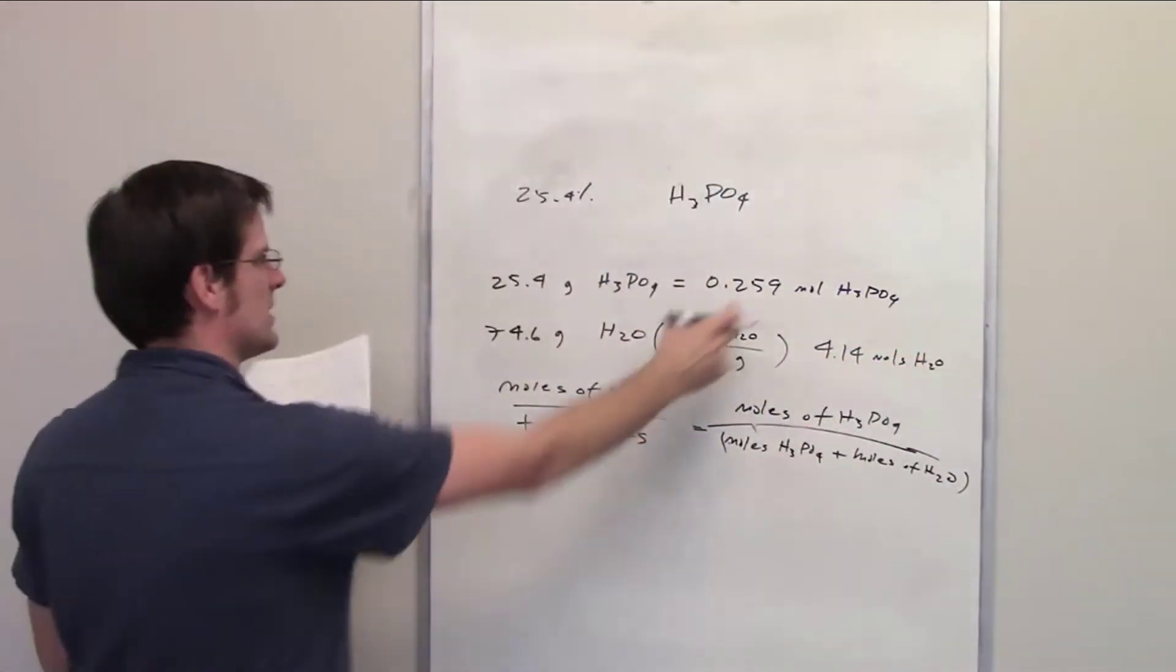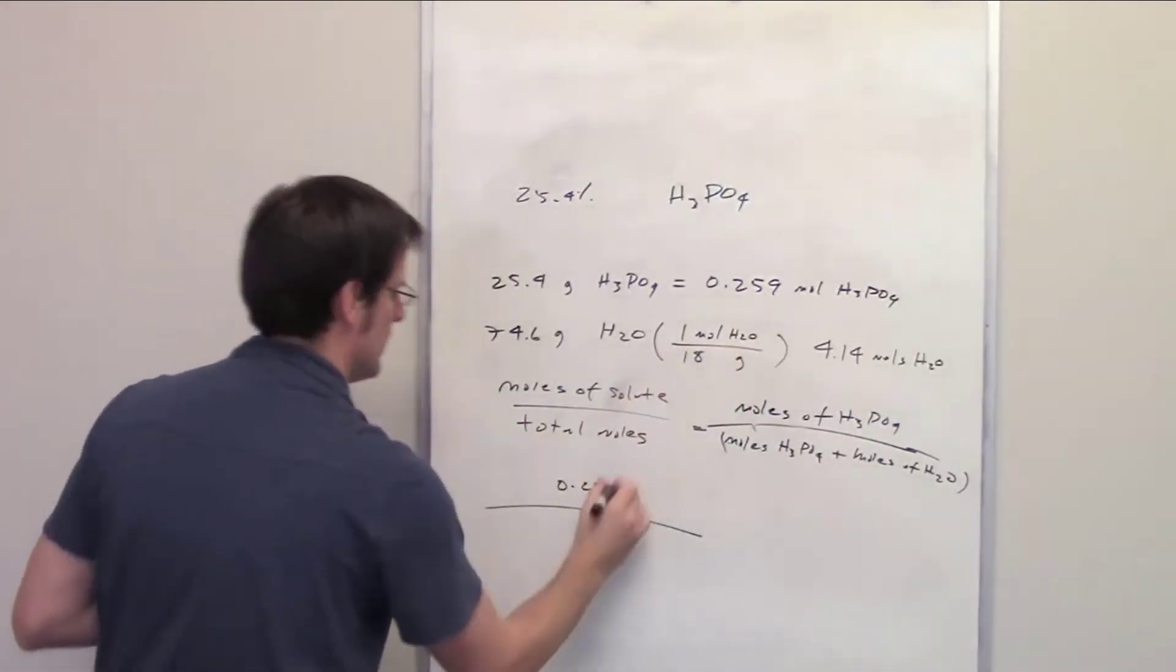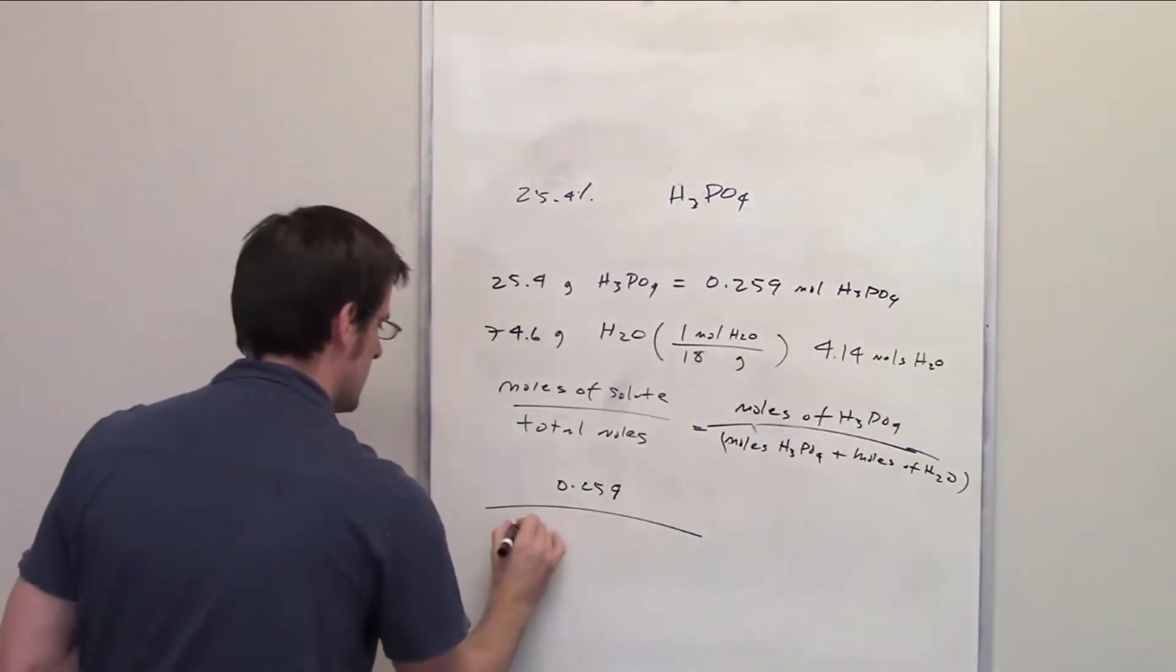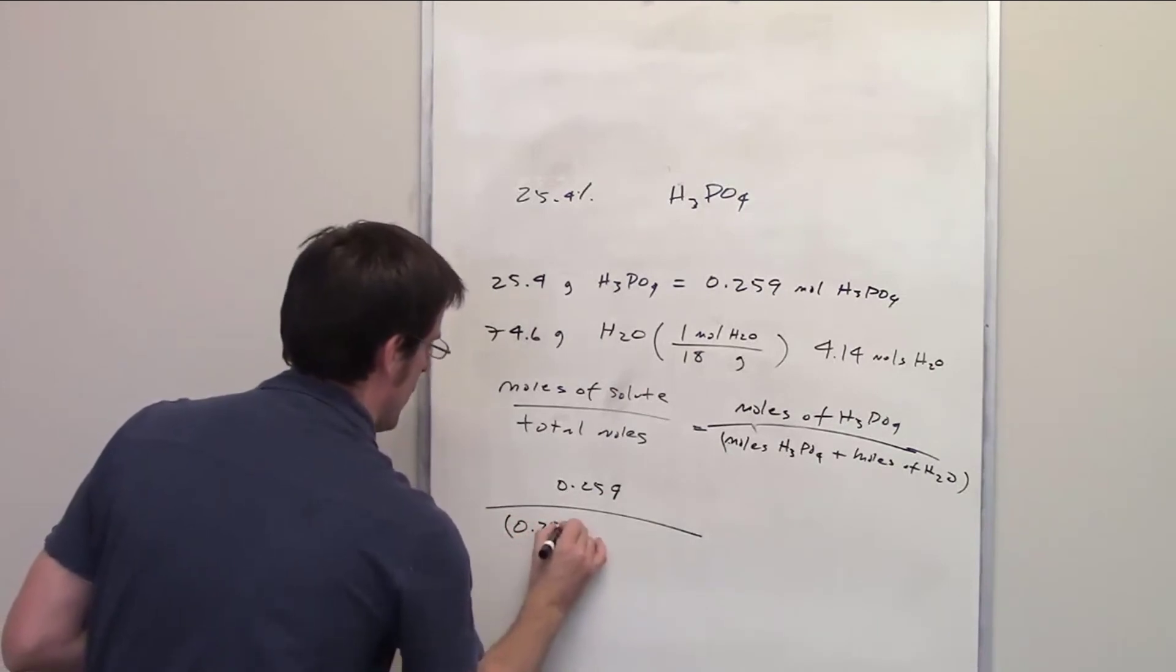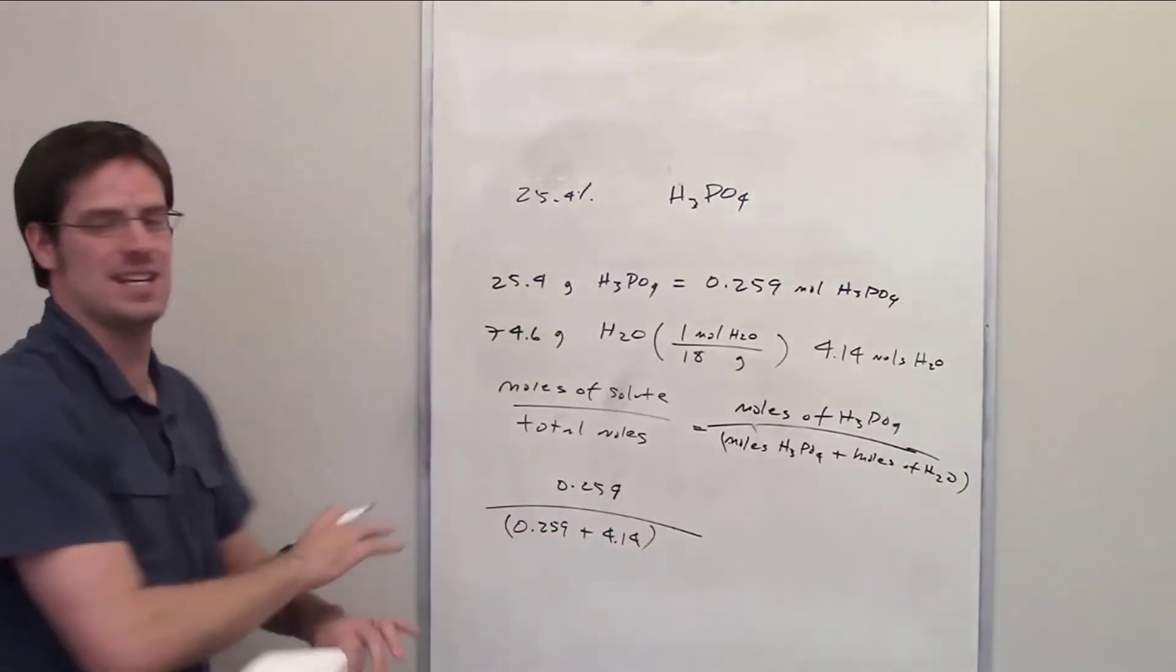So the mole fraction for this is going to be 0.259—that's the total number of moles of phosphoric acid—divided by 0.259 plus 4.14. That's the total moles in the entire thing.